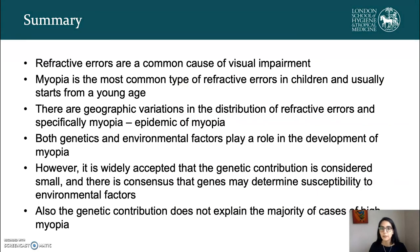In summary, refractive errors are a common cause of vision impairment. Myopia is the most common type of refractive error in children and usually starts from a young age. There are geographic variations in the distribution of refractive errors, specifically myopia, now known as the epidemic of myopia. Both genetics and environmental factors play a role in the development of myopia. However, it is widely accepted that the genetic contribution is considered small, and there is consensus that genes may determine susceptibility to environmental factors, and that genetic contribution does not explain the majority of cases of high myopia.